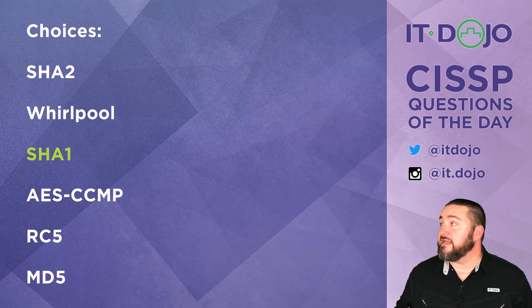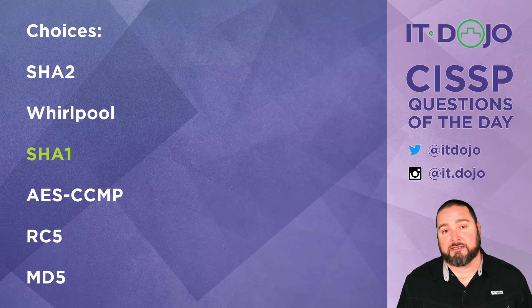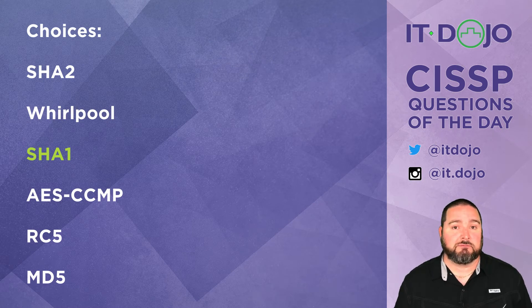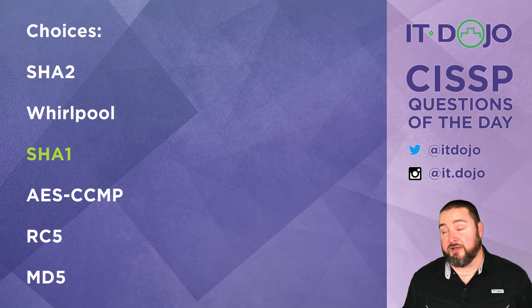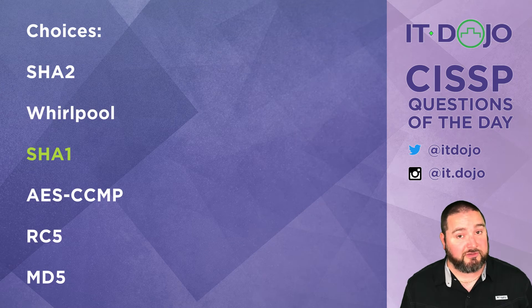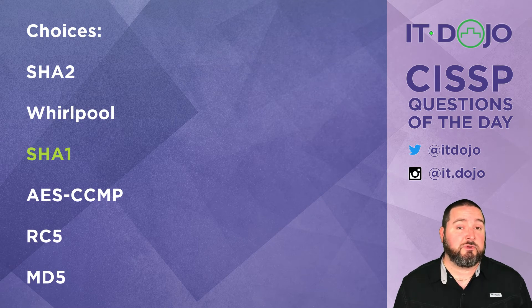AES-CCMP is not even a hashing algorithm — it's used for confidentiality as well as some data integrity, so it cannot be a correct answer. Equally wrong is RC5; RC5 is also a confidentiality algorithm and is not a hashing algorithm, so that also can't be one of our right choices.